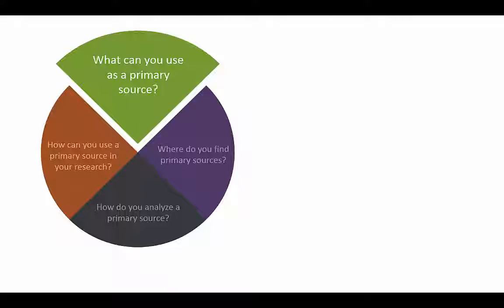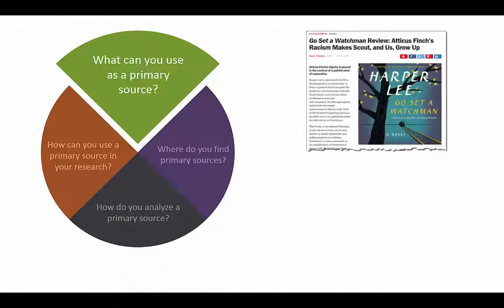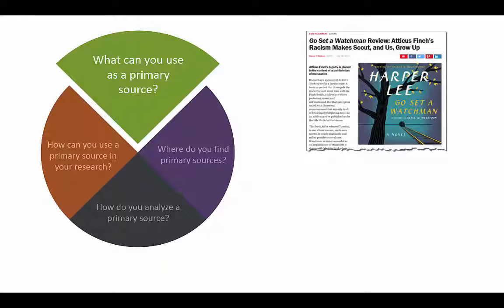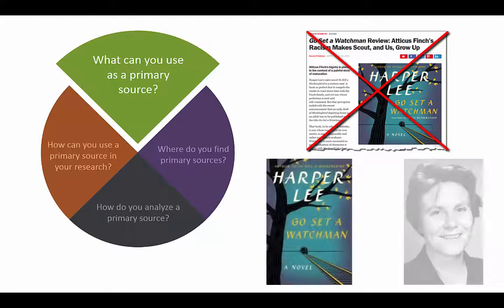The types of primary sources you will use depend on what you're researching. For example, a book review of Harper Lee's Go Set a Watchman is a secondary source if you are writing about the novel or about the author's life.